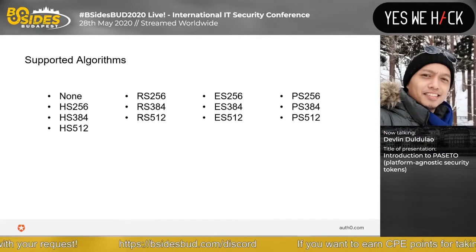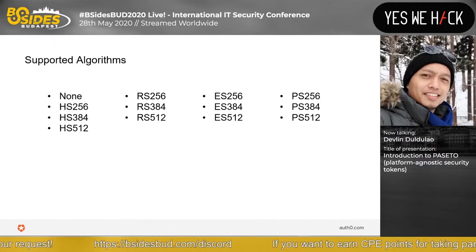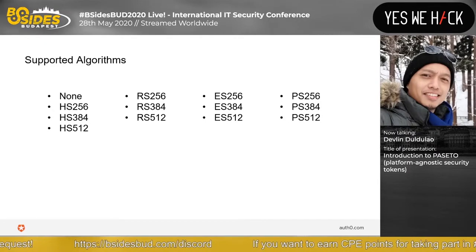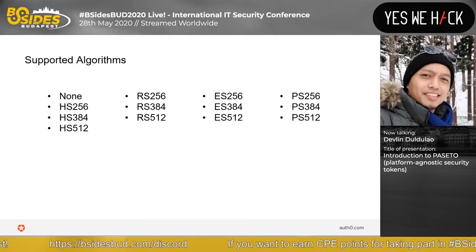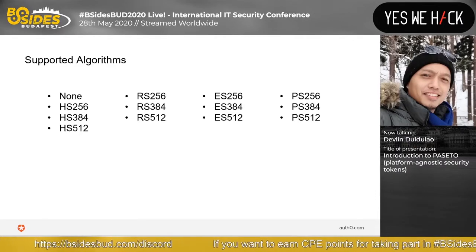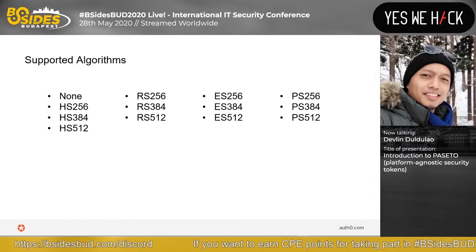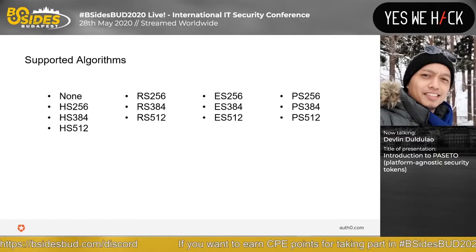Here we have supported algorithms: HMAC plus SHA (HS), RSA plus SHA (RS). We also have ES256, which is an asymmetric key cryptography algorithm — the elliptic curve digital signature algorithm. And then some PS variants as well.